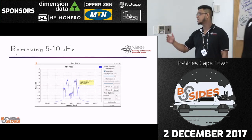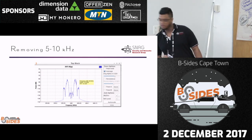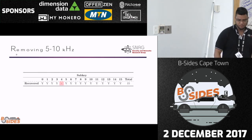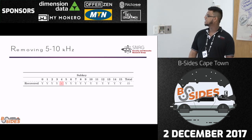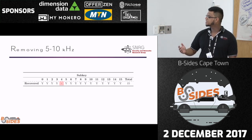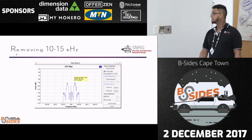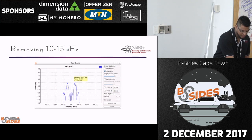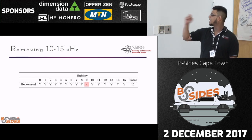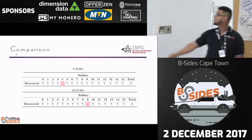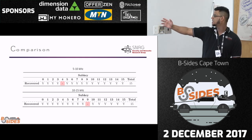We then incremented the range — instead of 0 to 5, we removed 5 to 10 kHz. Once we removed that range, we were able to recover 15 of the 16 sub-keys. As we removed more frequencies, we recovered more and more sub-keys. Eventually removing 10 to 15 kHz, we again recovered 15 of the 16 sub-keys — though on this occasion sub-key 9 was not located, whereas previously sub-key 4 was not recovered. So there is an overlap between removing signals and the information being recovered.